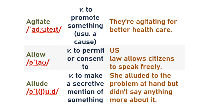The next word is 'allow' — not 'allow' but 'allow.' Allow is a verb which means to permit or consent to. For example: 'US law allows citizens to speak freely.' It is used as a verb placed right after the subject in a sentence.